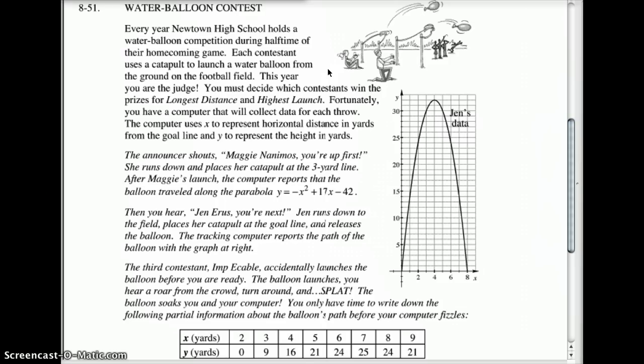You must decide which contestants win the prize for the longest distance and highest launch. Fortunately, you have a computer that will collect data for each throw. The computer uses x to represent the horizontal distance, that being this distance, and y to represent the height the balloon reached. The announcer shouts, Maggie, you're up first! She runs down and places her catapult at about the three-yard line. After Maggie's launch, the computer reports that the balloon traveled along the parabola of y equals negative x squared plus 17x minus 42. You'll need to chart out Maggie. You'll need to chart her out from the three-yard line on up and see how high her throw went and where did it land.